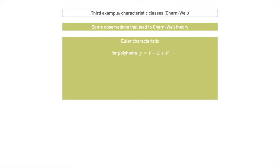We can generalize it a bit further. For any finite CW complex, we can define the Euler characteristic as the alternating sum of the number of i-cells. So we see that for two-dimensional things, for surfaces, this corresponds exactly — we recover the equation for polyhedra. This is really a good generalization in that we can recover our original motivating statement, and we can generalize this a bit further.